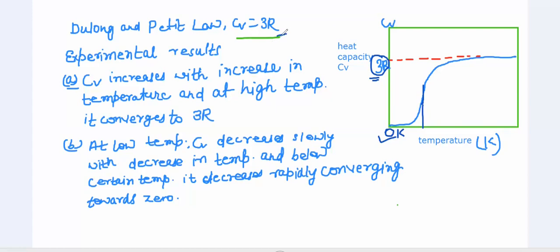At higher temperature Dulong and Petit's Law is satisfied, but what about at low temperature? At lower temperature, CV decreases slowly with decrease in temperature, and below a certain temperature it decreases rapidly, converging towards 0 as T goes to 0. But according to Dulong and Petit's Law it should be a constant value, whereas the experimental results show that CV is a function of temperature.